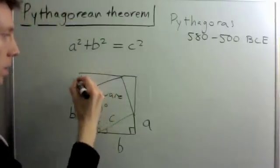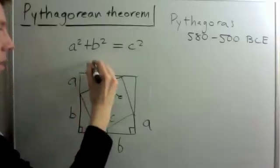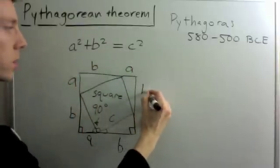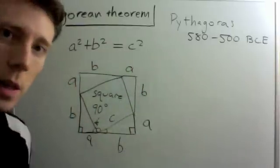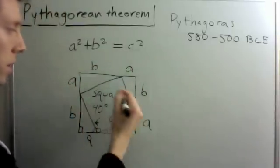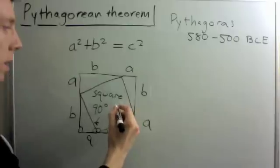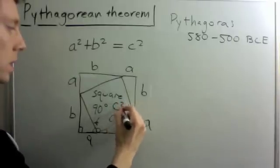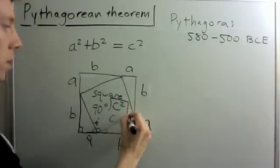Because each of these triangles is the same as the original, they have side lengths a, b, and c. So the area of this square is going to be c squared.